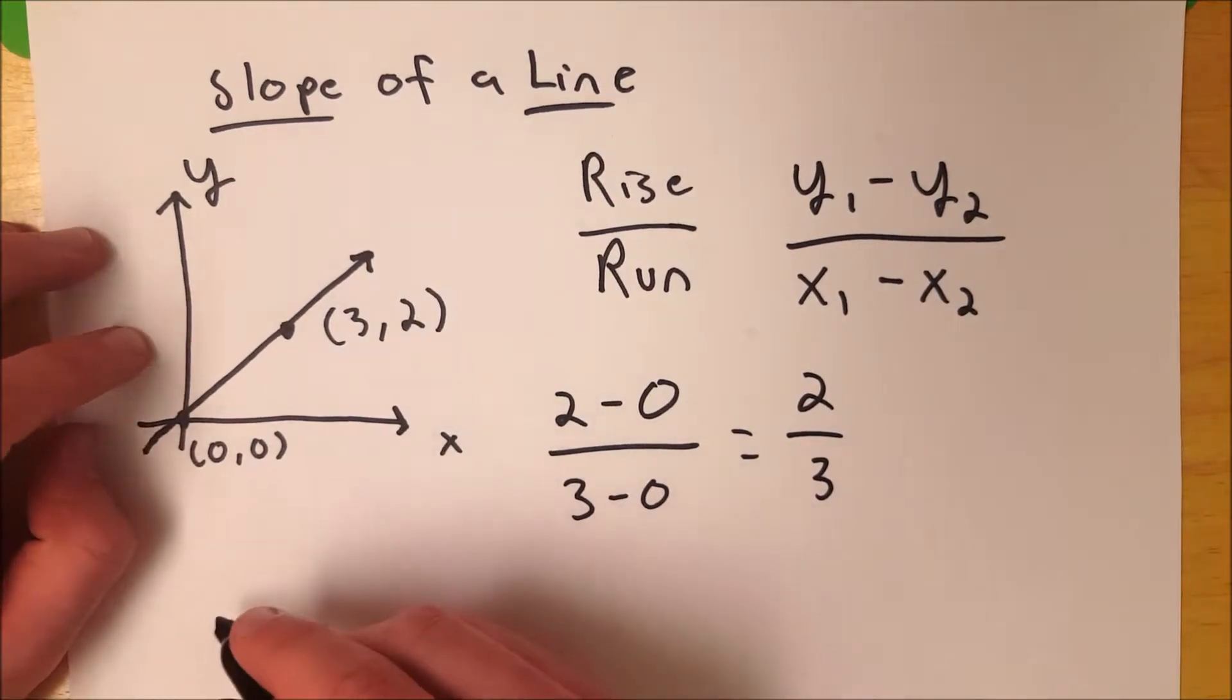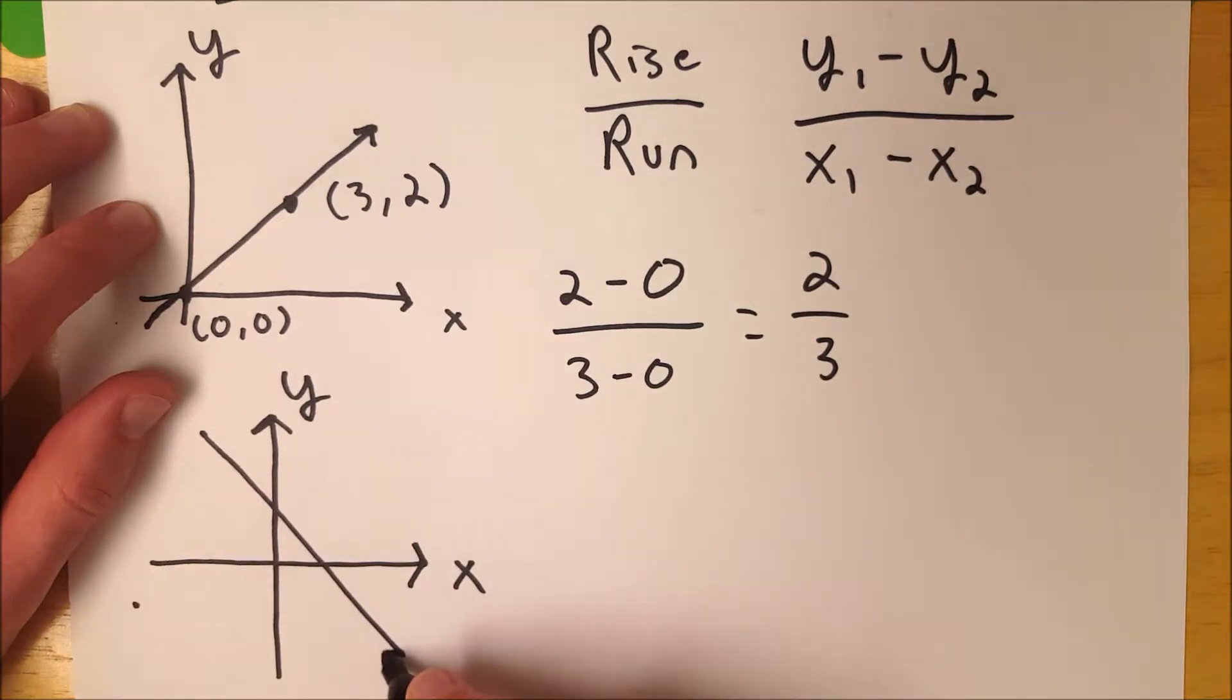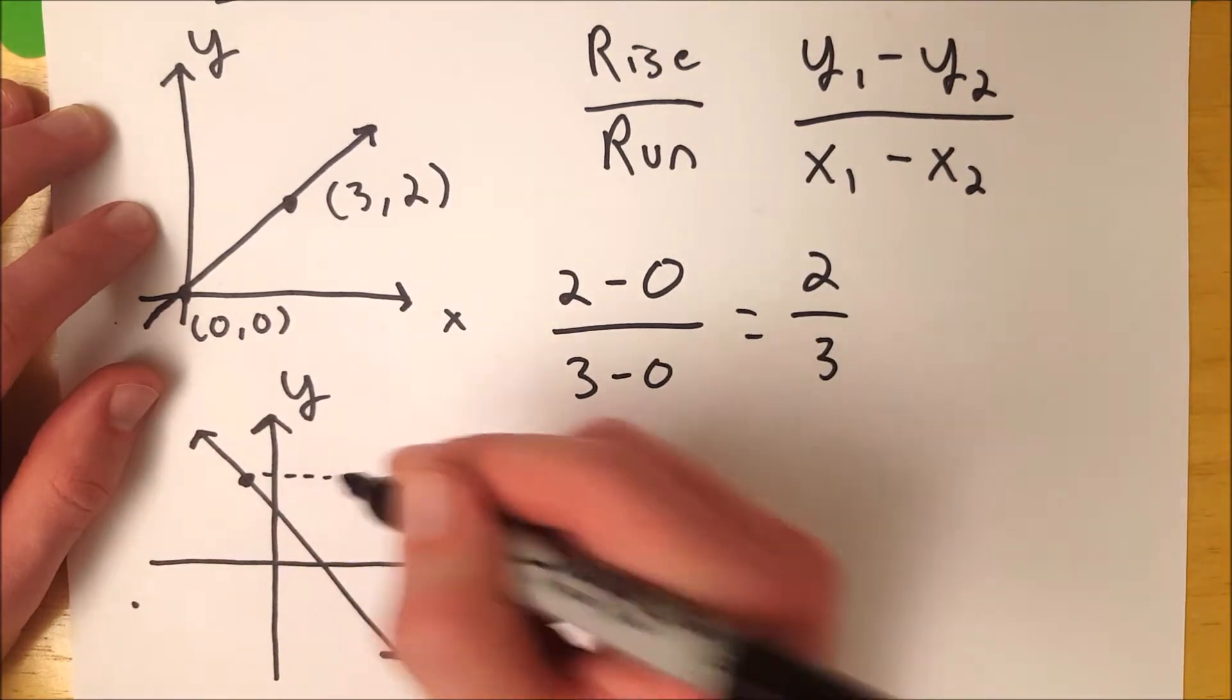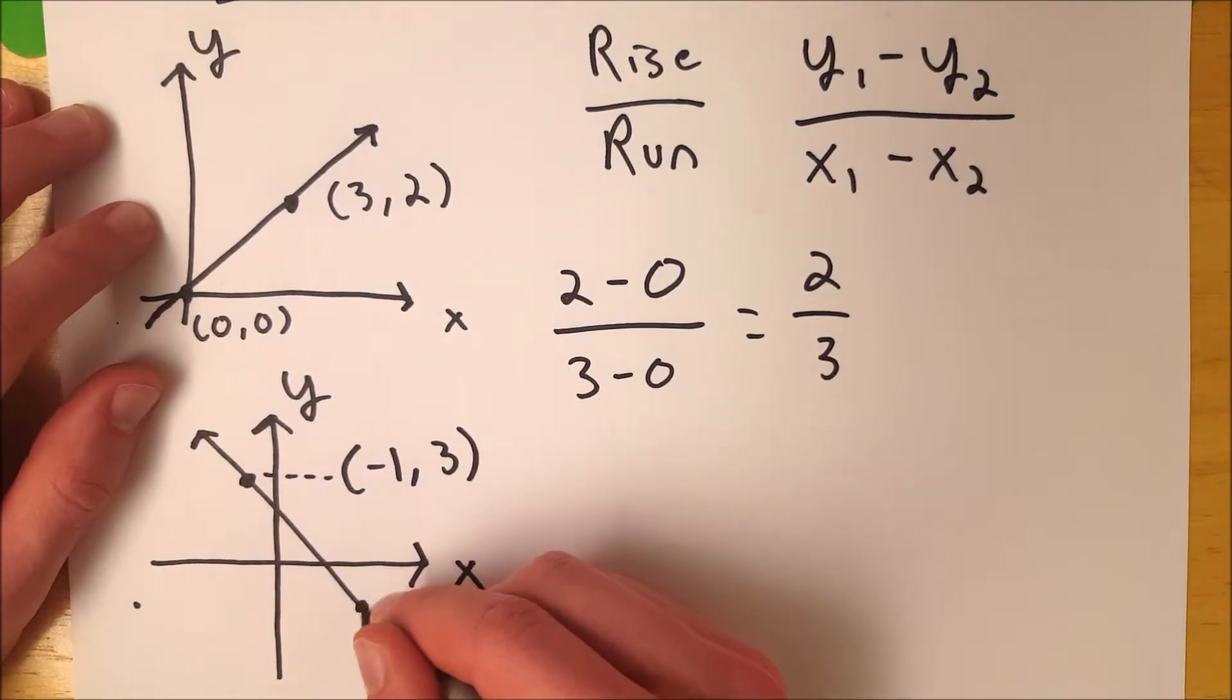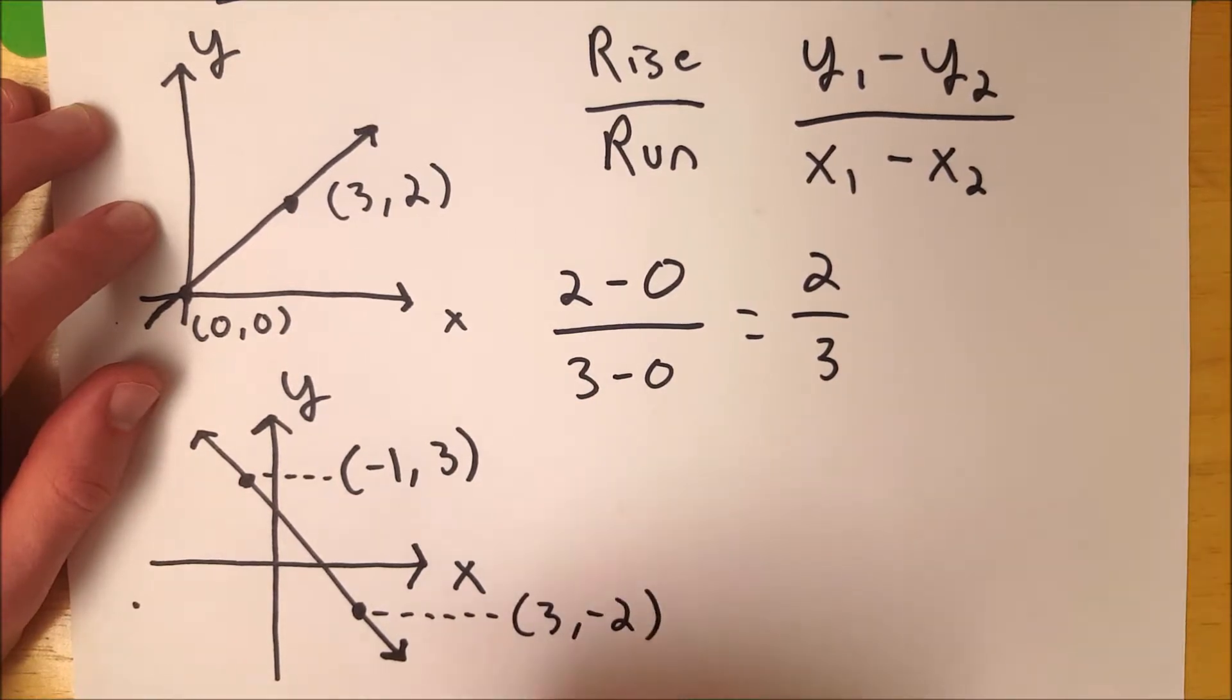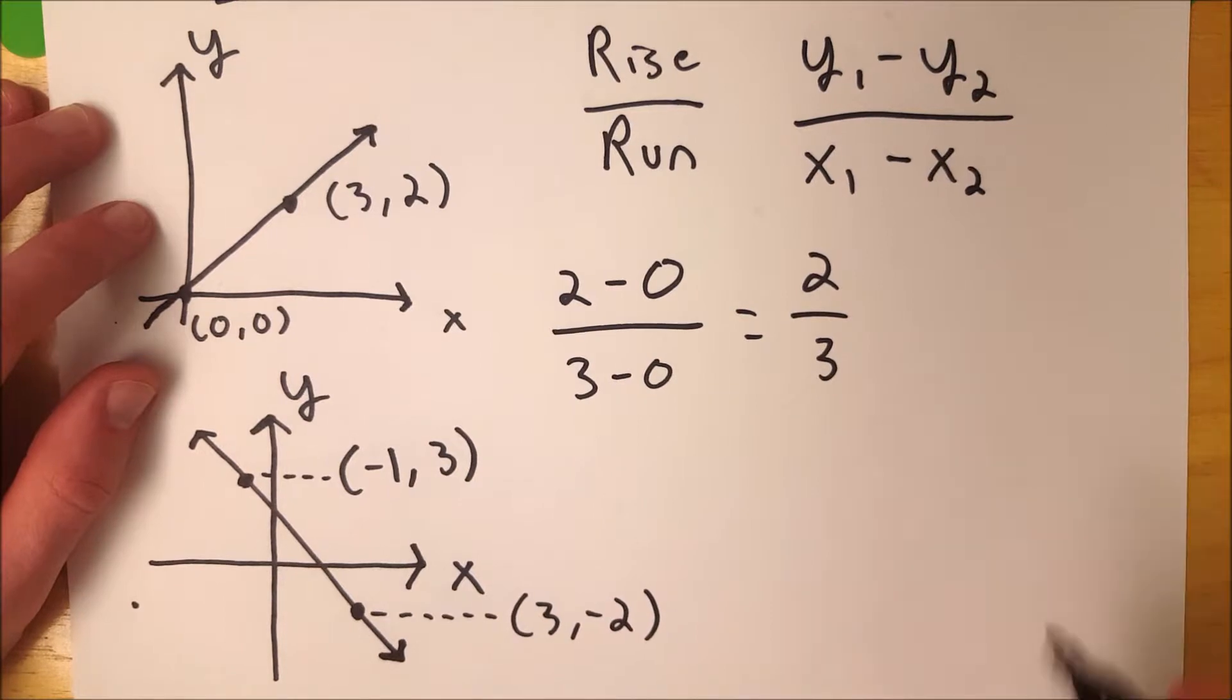Let's look at another example with not-so-nice numbers. Let's do a negative line. So a line that looks like that. Let's take two points. Let's say we've got a point right here that is -1, 3. And let's say we've got a point right here, let's say that's 3, -2. I'm not labeling your units here. That's not really important. We're just picking any two points that could feasibly be on this line, and we're going to go through this slope formula.